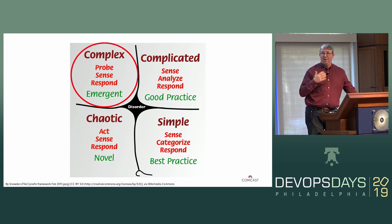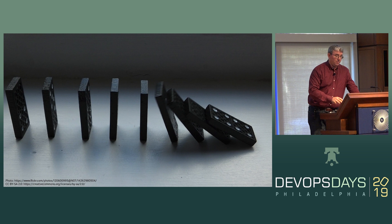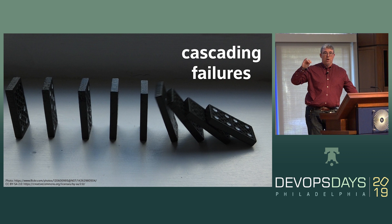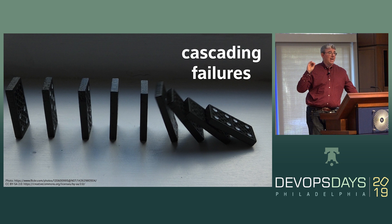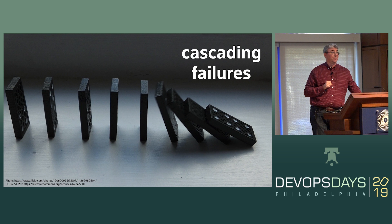One of the first properties of complex systems is that they can exhibit cascading failures — the idea that one part of the system might fail, and then that causes another part to fail, and then another, and so on. Has anyone had experience with one of your services failing and then other services failing as a result? Raise your hands if you've had that happen. That's a lot of people. This is pretty familiar.